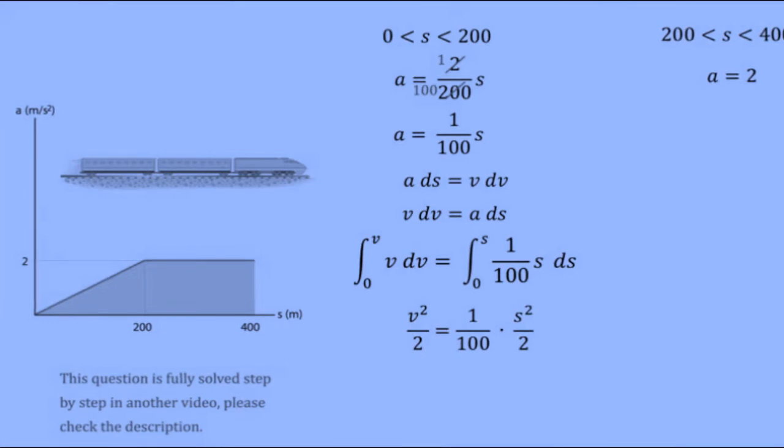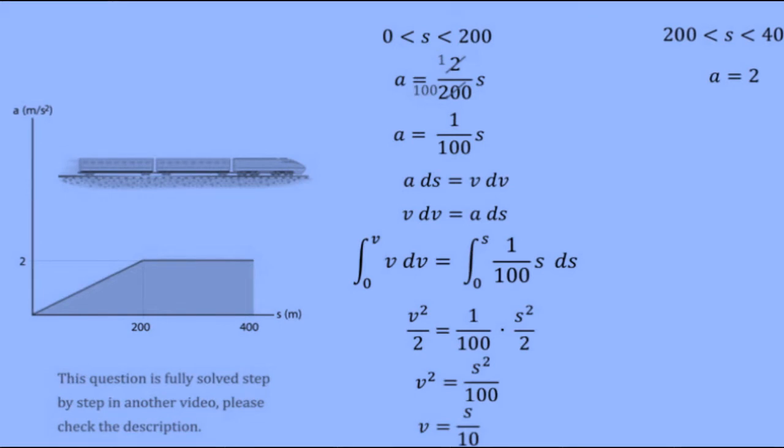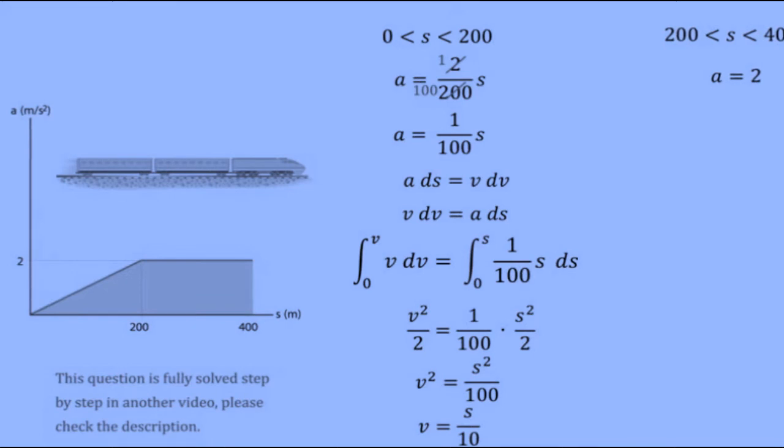It is just a matter of isolating for v by taking the square root of both sides. As always, you need to substitute the value at which the new segment starts to find the initial lower bounds for the next integral.